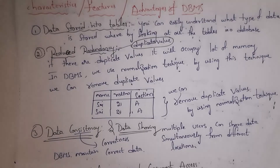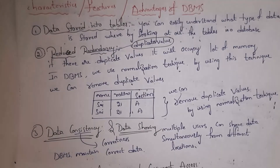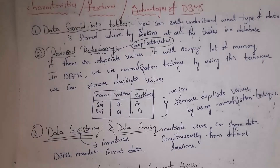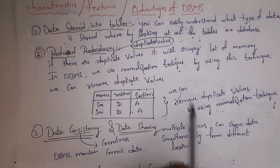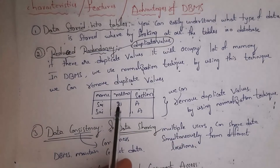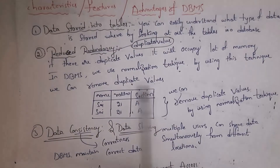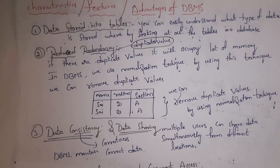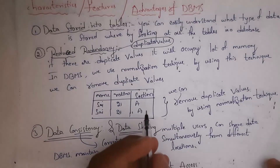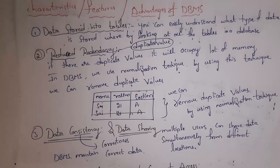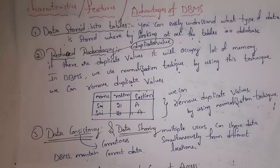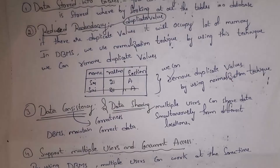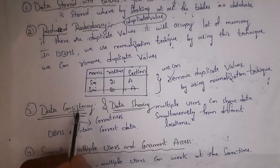The next feature is reduced redundancy. Redundancy means duplicate values. In DBMS we can remove duplicate values — if duplicate values exist, the system occupies a lot of memory. For example, if a student entry repeats twice in the table, that is a duplicate. DBMS uses a normalization technique to remove duplicate values. By using normalization, redundancy is reduced, and when there are no duplicate values, data automatically becomes consistent — meaning correct.